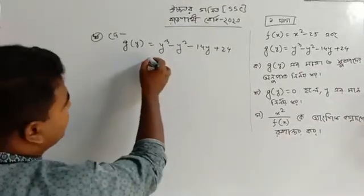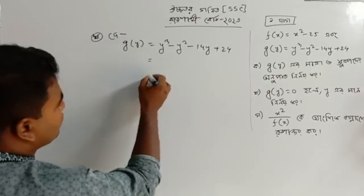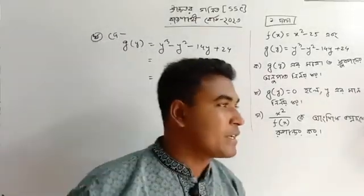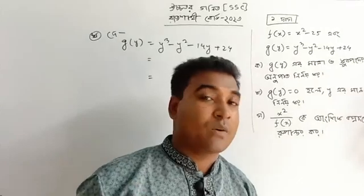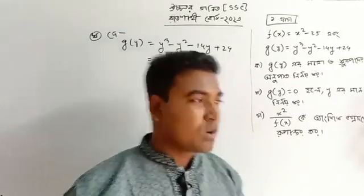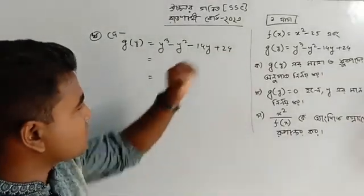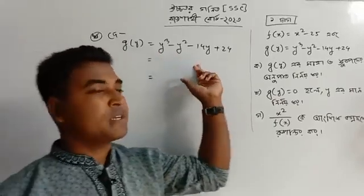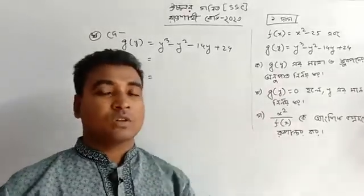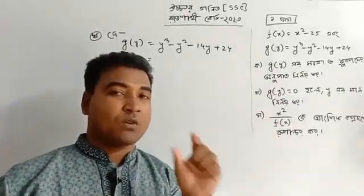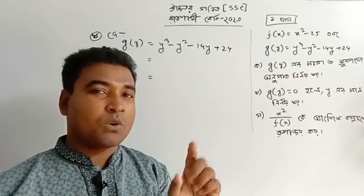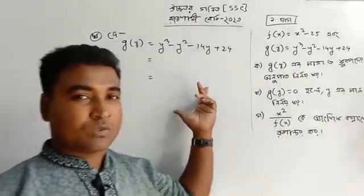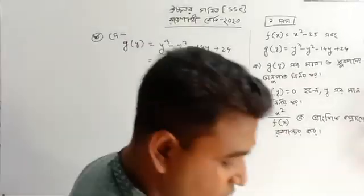So we can see what happens when the first step is done. This solution uses a vanishing method, which means that the factor of the expression and factorization will be done in the second step.